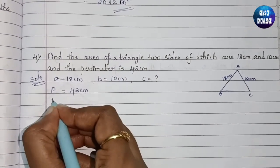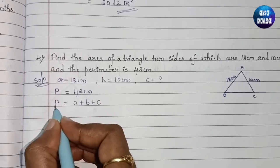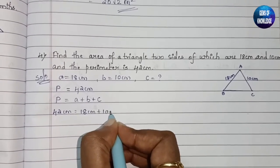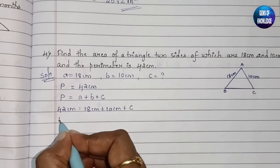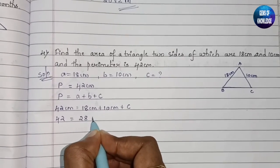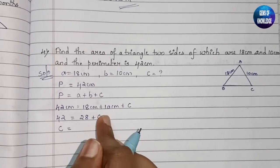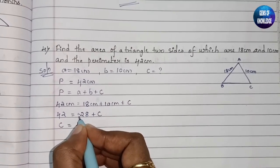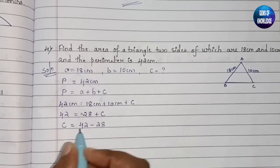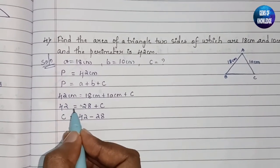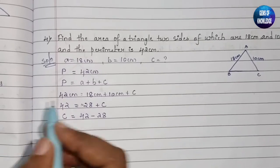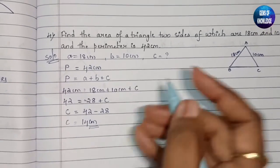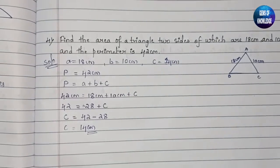We know perimeter equals a plus b plus c. So 42 equals 18 plus 10 plus c. That gives 42 equals 28 plus c. Moving 28 to the other side, c equals 42 minus 28, which is 14 centimeter. So the value of c is 14 centimeter.